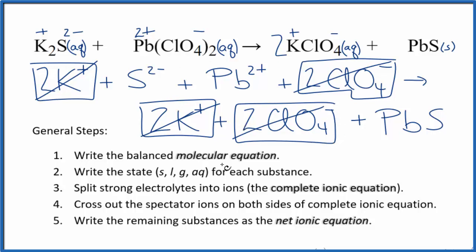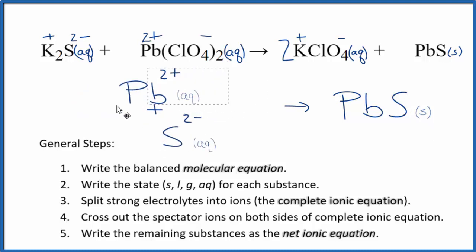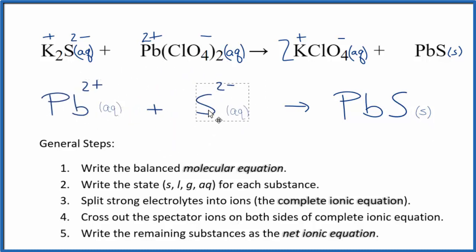What's left is the net ionic equation for K2S plus Pb(ClO4)2. I'll clean this up and write the states. So this is the balanced net ionic equation for potassium sulfide plus lead two perchlorate. If you notice, the charge is conserved. I have a two minus and a two plus, net charge of zero. Over here in the products, neutral compound, net charge of zero. The atoms, they're balanced as well. Often you'll see the positive ion put first. Doesn't really matter, does look a little nicer. And that's it. This is the balanced net ionic equation for potassium sulfide plus lead two perchlorate. Thanks for watching.